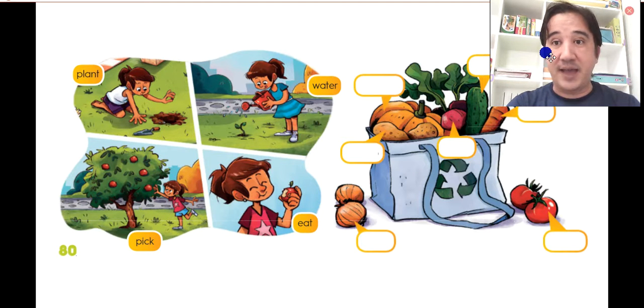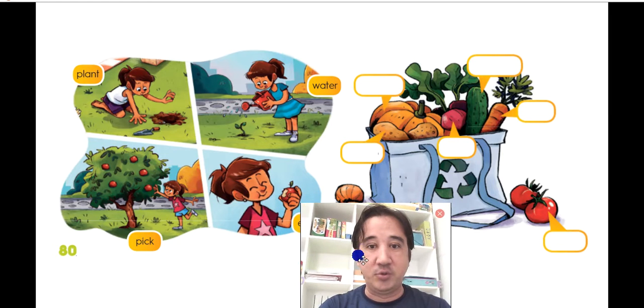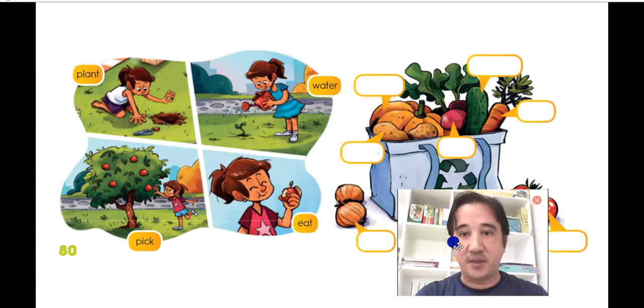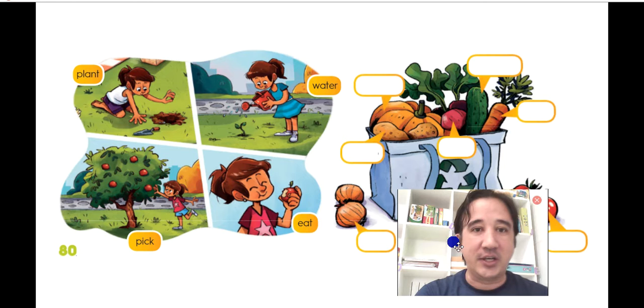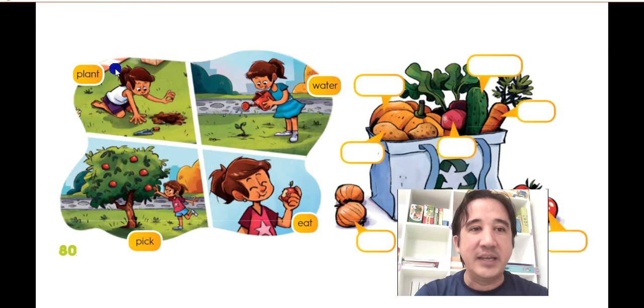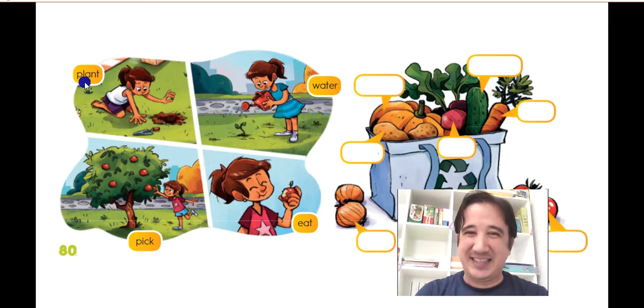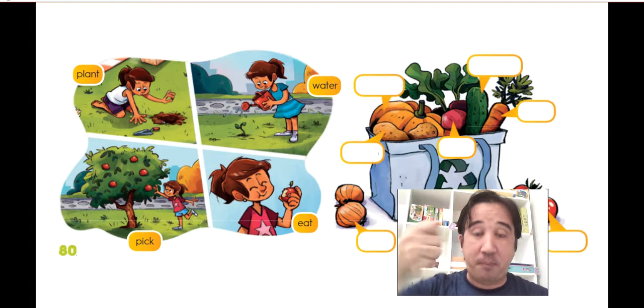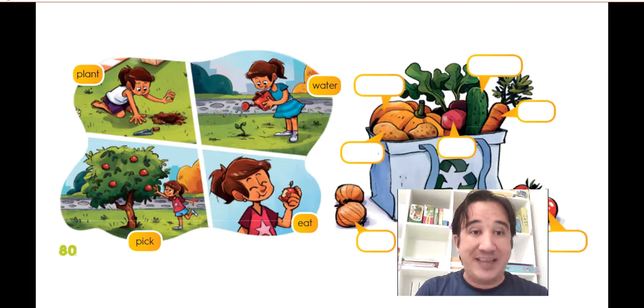And here, look what we have. So look, here is the little girl, she's taking care of. This is a life cycle of an apple tree. So look, first she did, she plant the seed in the soil. Then, she puts water, she pour water on that sprout. And then it grows like a big tree. So she can pick an apple and then she eat.